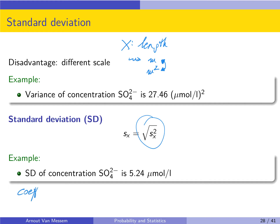Another less common measure of spread is the coefficient of variation. The coefficient of variation CV is the standard deviation divided by the mean. Clearly the CV is unitless — if x is a length, then the standard deviation is in meters and the mean is also in meters, so dividing them gives a value with no unit. The advantage of the CV is that it is unitless, and so it allows you to compare the spread for different variables which have different units. For example, comparing the standard deviation of length in meters and weight in kilos doesn't make sense, but if you look at the coefficient of variation, both are unitless and it does make sense to compare them.